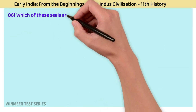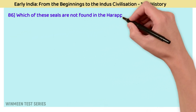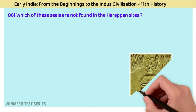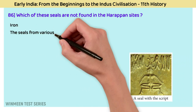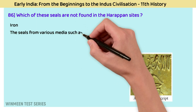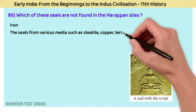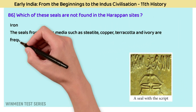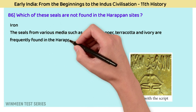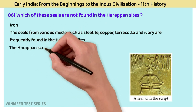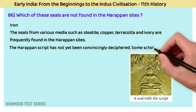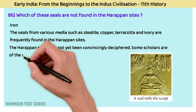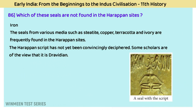Question 86: Which type of seals are not found in Harappan sites? The answer is iron seals. Seals from various media such as steatite, copper, terracotta, and ivory are frequently found in Harappan sites. The Harappan script has not yet been convincingly deciphered. Some scholars hold the view that it is a Dravidian language.